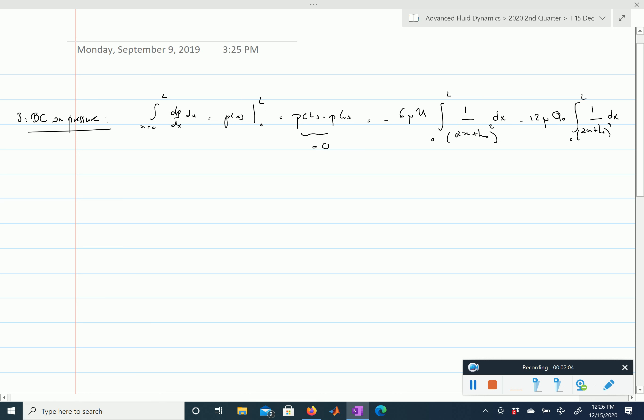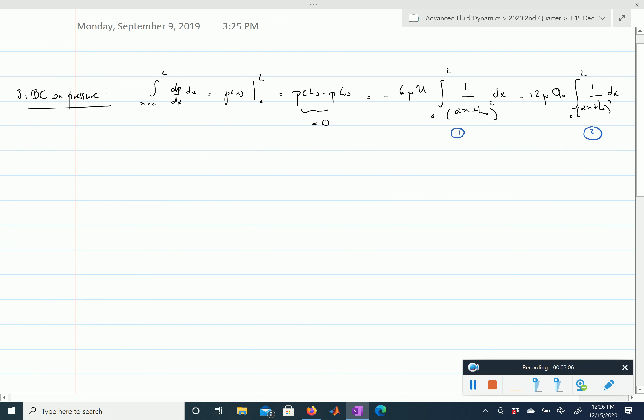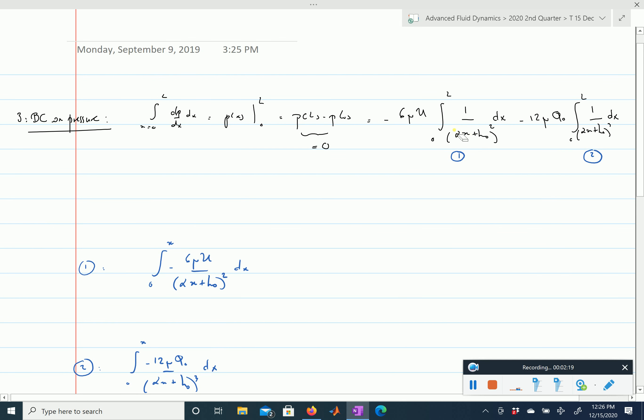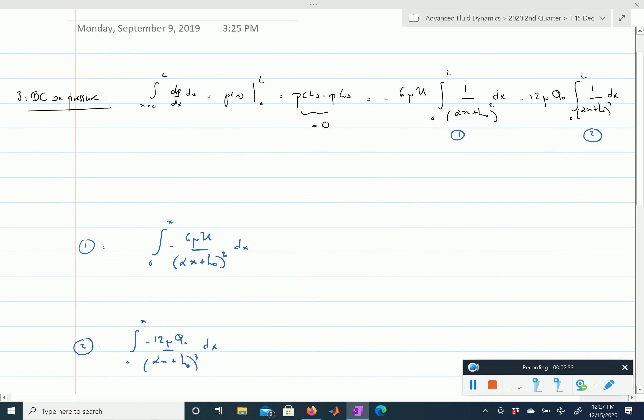Okay, so let's call these two terms 1 and 2, and we need to express those two terms. And essentially you see that this, so I've replaced h of x by alpha x plus h0, knowing that at x equals L, alpha L plus h0 is going to be equal to h1, so this is our final thickness of the gap.